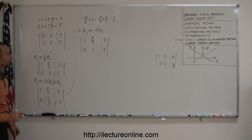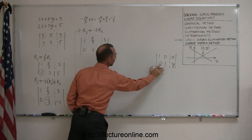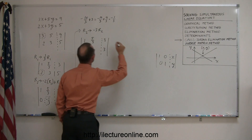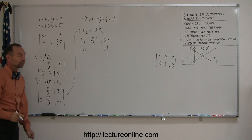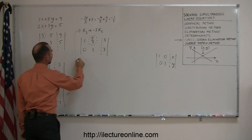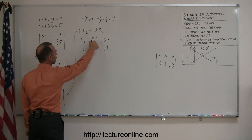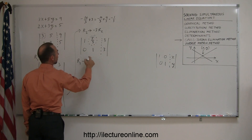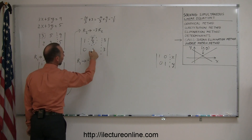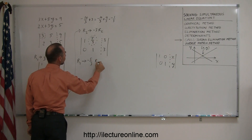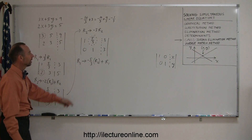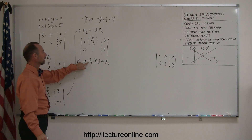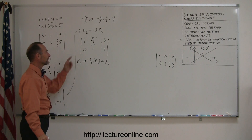Almost there. I have a 1, a 0, and a 1 — just what I need. Now we need to take this 5 over 3 and turn it into a 0. Using the Gauss-Jordan elimination method, the rule is that you take the row you want to change and replace it by the negative of this number — which is minus 5 over 3 — multiplied times the row that has the 1 in it, which is R2, and add it to the row you're changing, R1. So multiply 1 by negative 5 over 3 and add it to 5 over 3, and it'll turn into a 0.